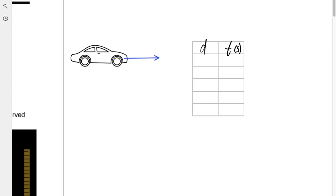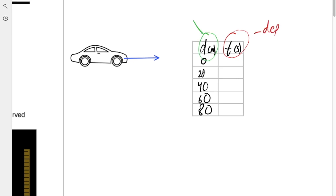There is a different way we could have done this. Instead of setting the times, we could have set the distances — measuring the time at positions like the 20, 40, 60, and 80 meter marks. That means time is now the dependent variable and position is the independent. Whatever numbers you choose before you run the experiment are your independent variables; the numbers you acquire during the experiment are the dependent variables. Generally speaking, time is usually the independent variable as a general rule.